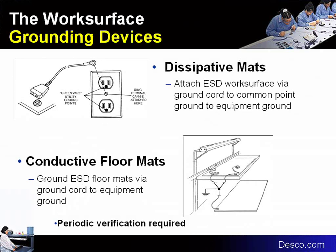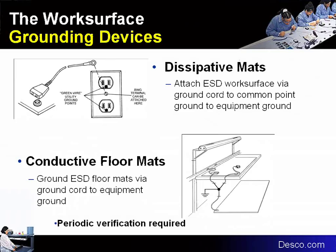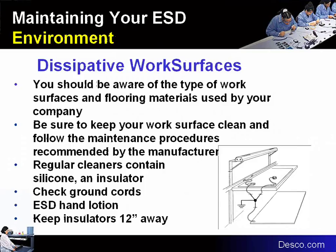One of the second lines of defense is to have a dissipative work surface mat that is grounded, keeping the operator at zero voltage with both the wrist strap and work surface grounded via a ground cord. Conductive floor mats are also available for standing tasks, grounded in conjunction with the table mats. Always use dissipative material as the work surface or anything that has intimate contact with an electrostatic sensitive device. Keep the area clear of insulators, visually check the ground cord occasionally, and ESD hand lotion can help enhance contact between the wrist strap and the operator.